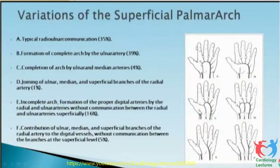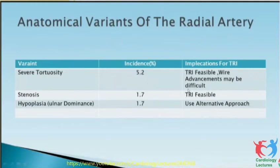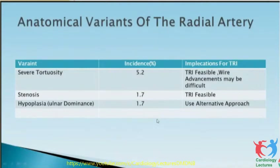These are various variations in radial and ulnar anatomy. Mossy completeness is the formation of a complete arch by the ulnar artery. Anatomical variants of the radial artery: severe tortuosity can occur in 5.2 percent — TRI is feasible but wire advancement may be difficult; advance the wire slowly under fluoroscopic guidance. Radial artery stenosis occurs in 1.7 percent — TRI is still feasible; you can use balloon-guided wire crossings or dilate the stenosis first. Hypoplasia with ulnar dominance in 1.7 percent is a difficult situation.